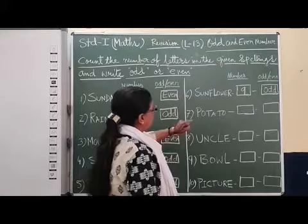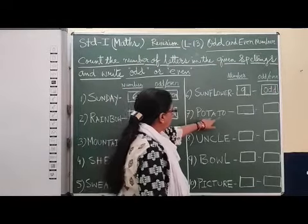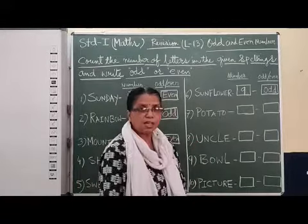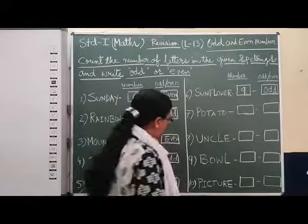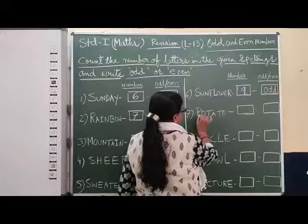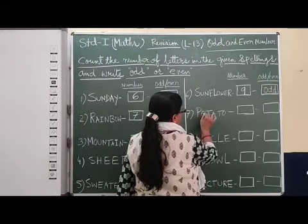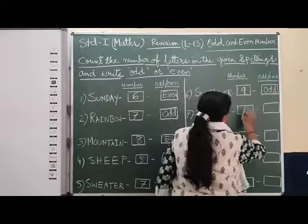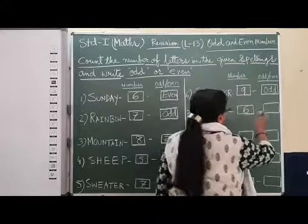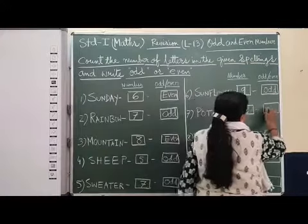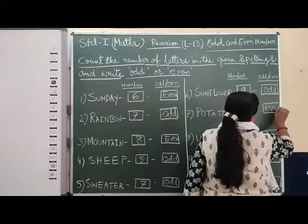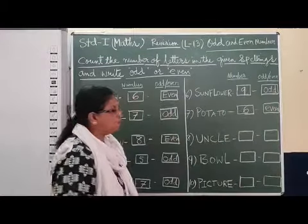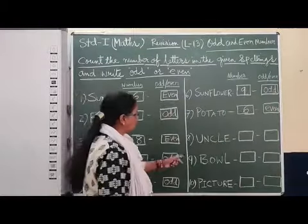Next: P, O, T, A, T, O — Potato. Do you like it? How many letters are used? One, two, three, four, five, six. Six is an even number. I think you have now learned which numbers are even and which numbers are odd.